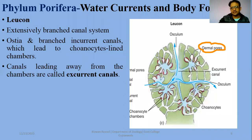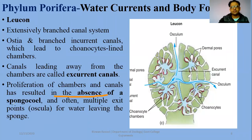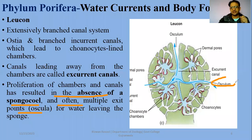There are two kinds of canals in leucon sponges: incurrent canals and excurrent canals. Excurrent canals lead away from the chambers and carry water away from the body. The proliferation of chambers and canals has reduced the spongiocele. An important point is that the spongiocele is absent in the leucon body form. Also, often there are multiple exit points — the oscula can be more than one, so there are multiple exit points for water as well.